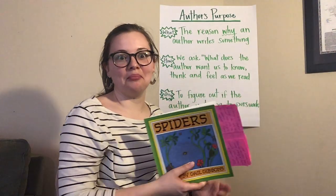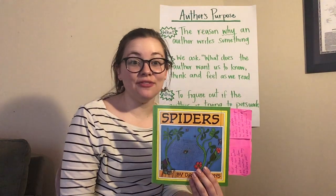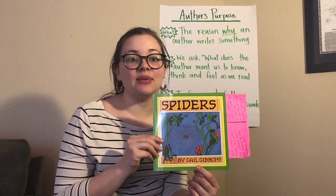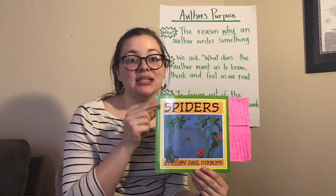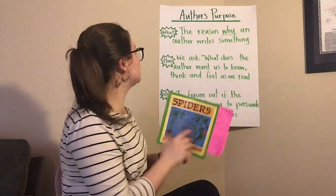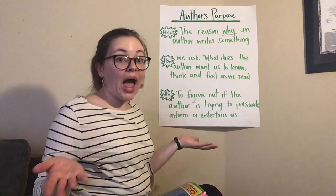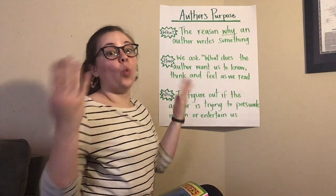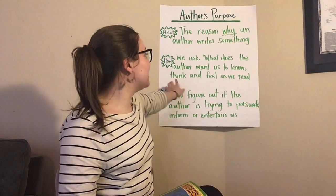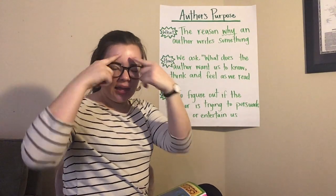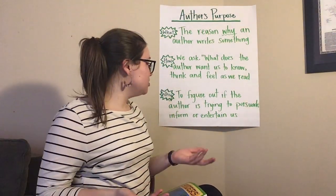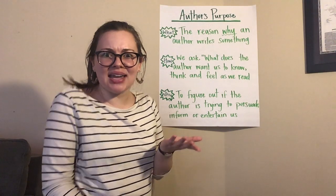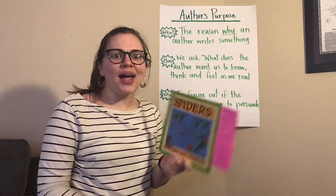That's the end of our story. Remember, your job is to figure out and answer this question: what is the author's purpose for writing this text? The author's name is Gail Gibbons and she wrote Spiders. The author's purpose is the reason why an author writes something. We can find it by asking what does the author want us to know, think, and feel? We want to figure out what the author is trying to do — persuade us, inform us, or entertain us. I can't wait to see what you think about why the author wrote this text.